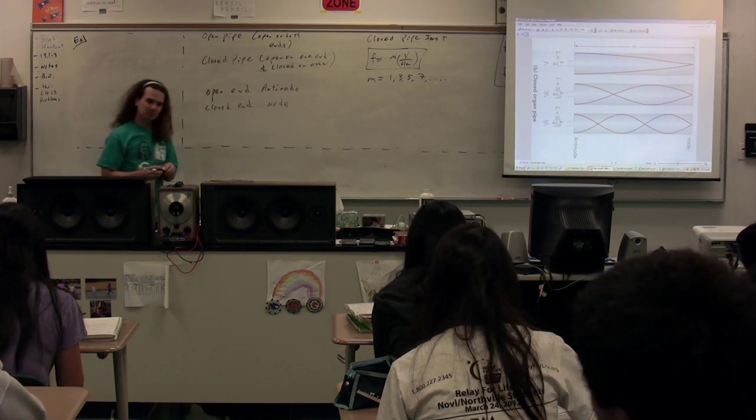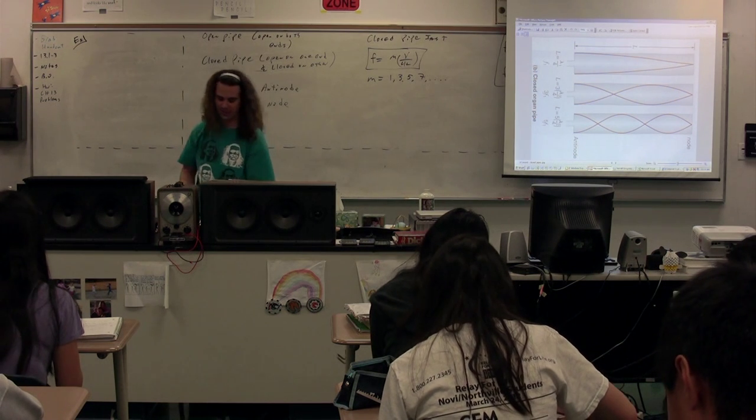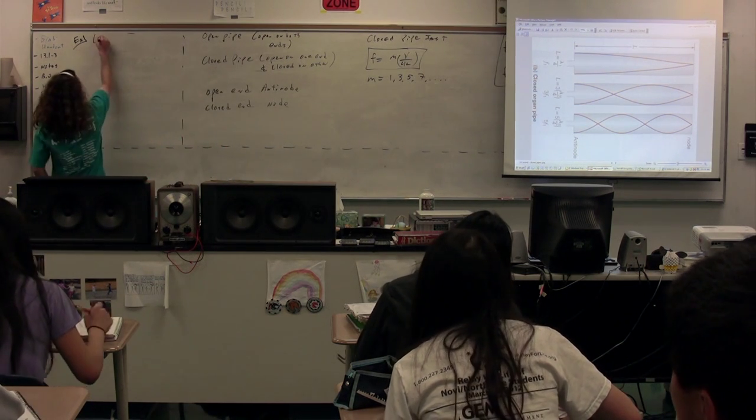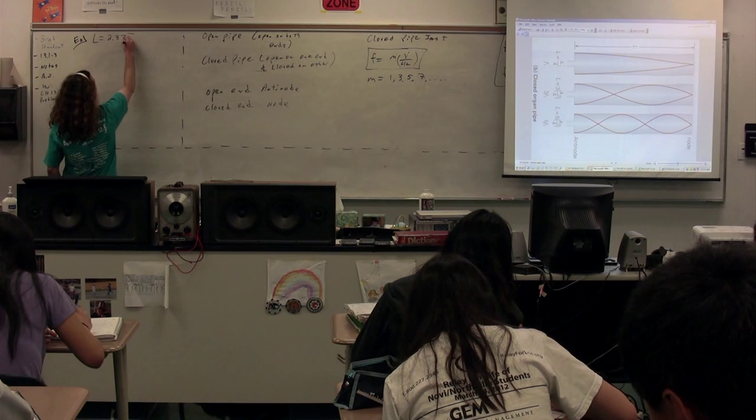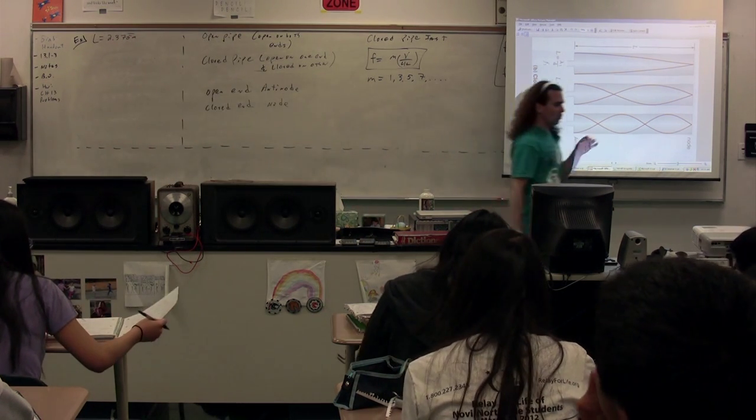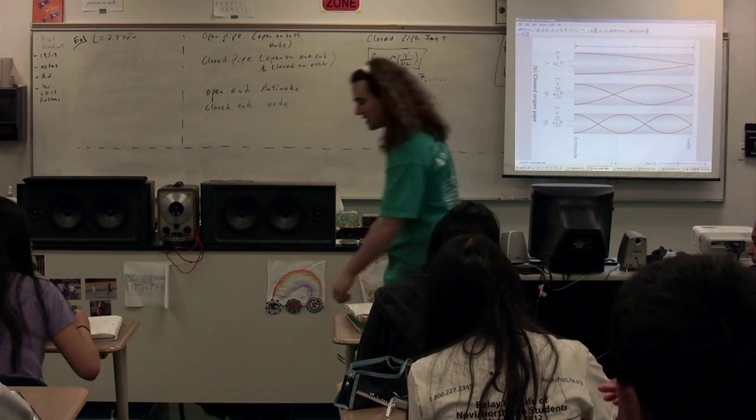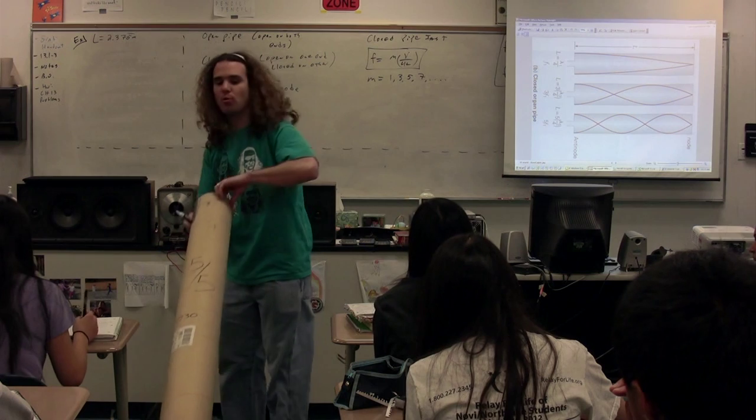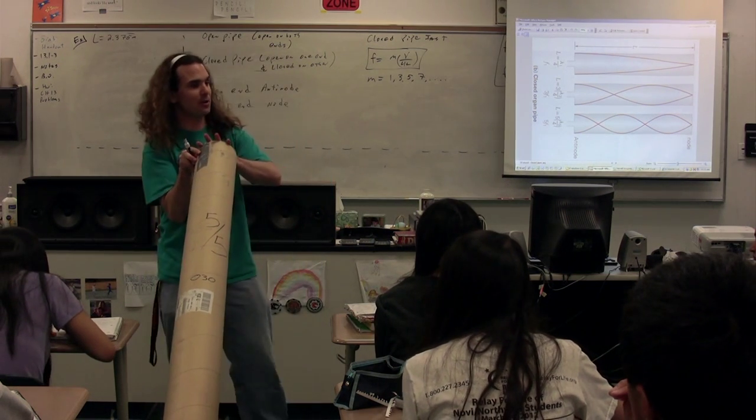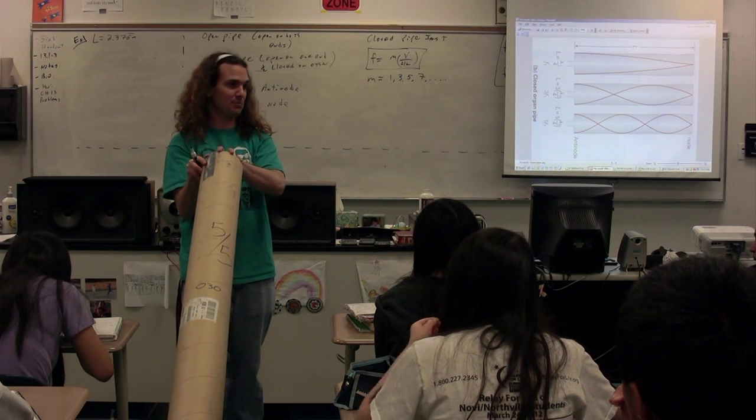I have taken some measurements. We know the length of this instrument is 2.375 meters. Now the truth of the matter is that with all wind instruments, the physical length of the instrument is not enough, because a small portion of the air actually vibrates outside the instrument, and that is dependent on the diameter of the pipe itself.